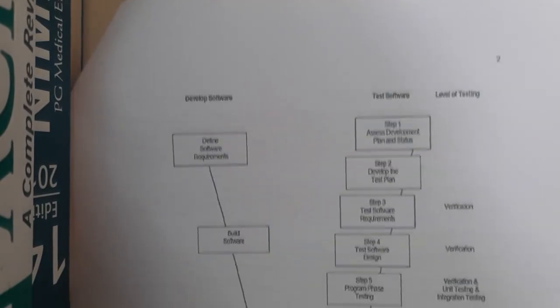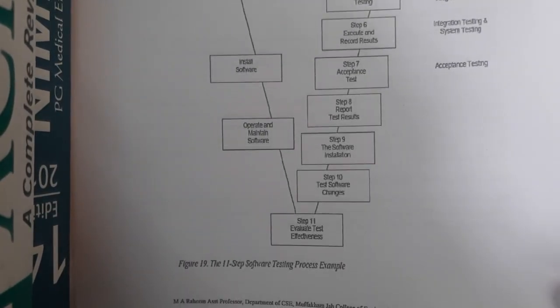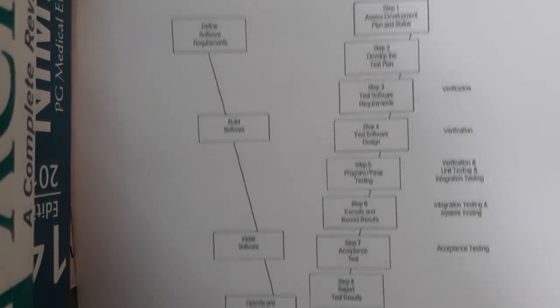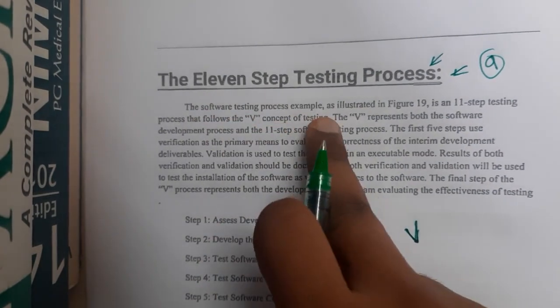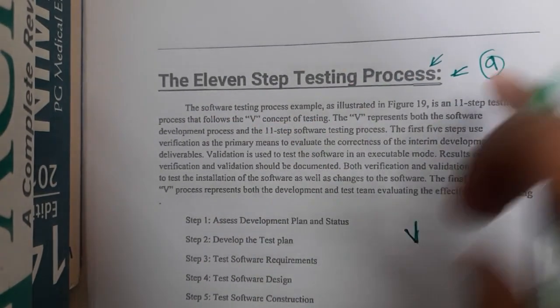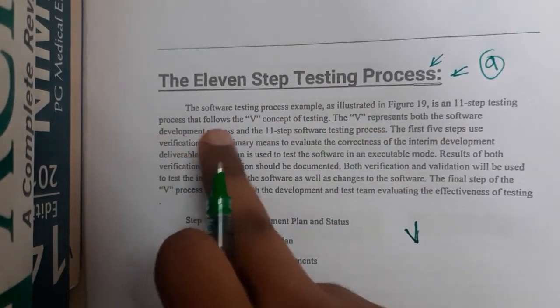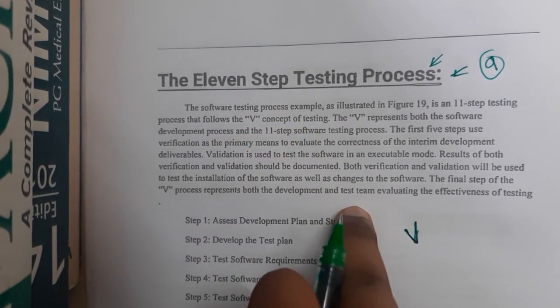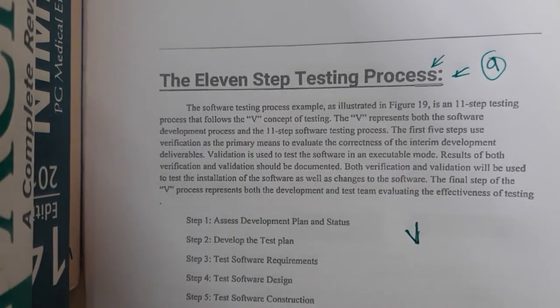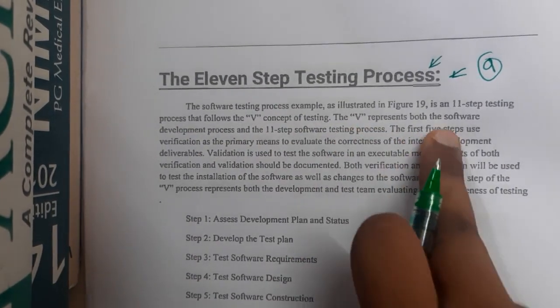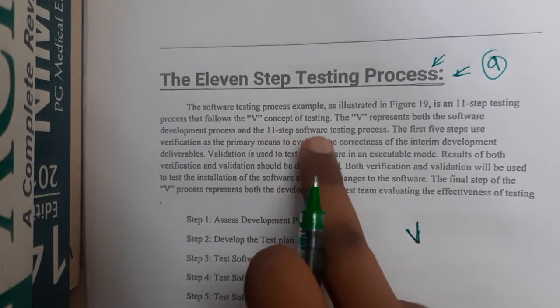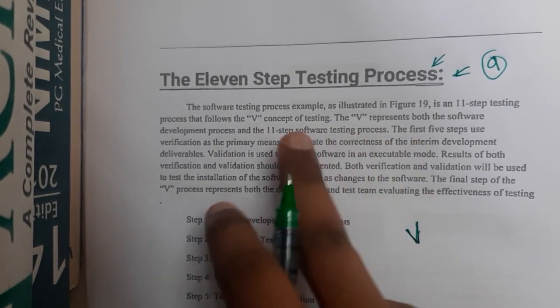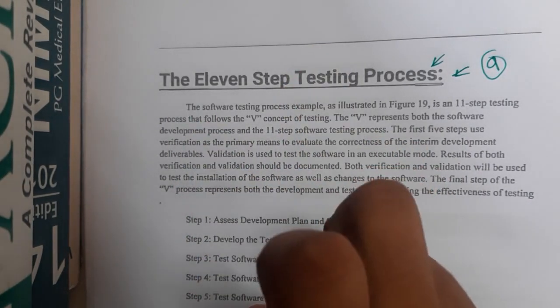The image is a bit large so I'm sliding it so you can see. It is in the shape of a V. The software testing process, as illustrated in figure 19, is an 11-step testing process following the V-concept of testing, also called V-shaped testing or V-concept testing. The V represents both the software development process and the 11-step software testing process.